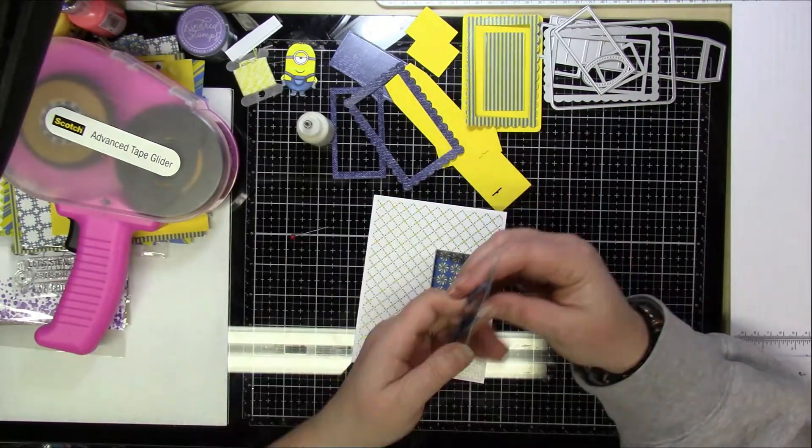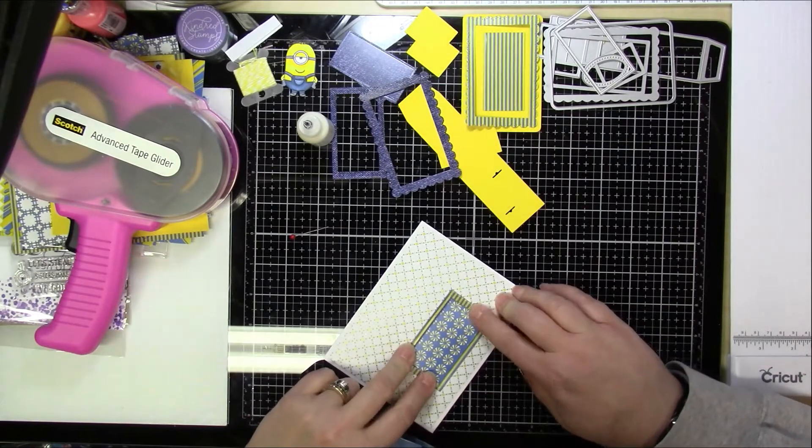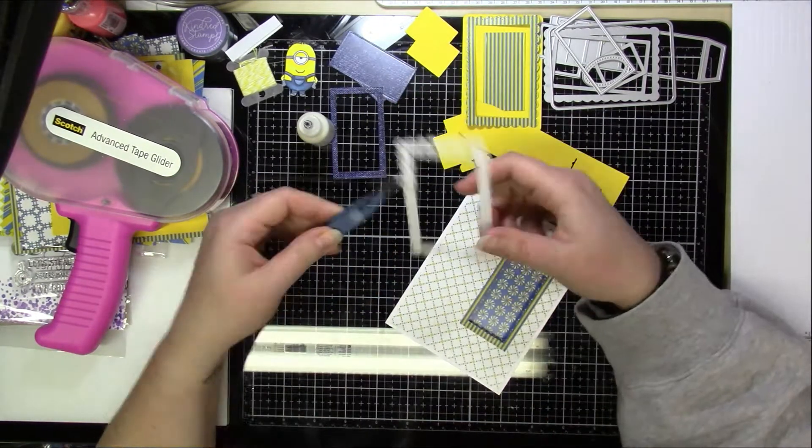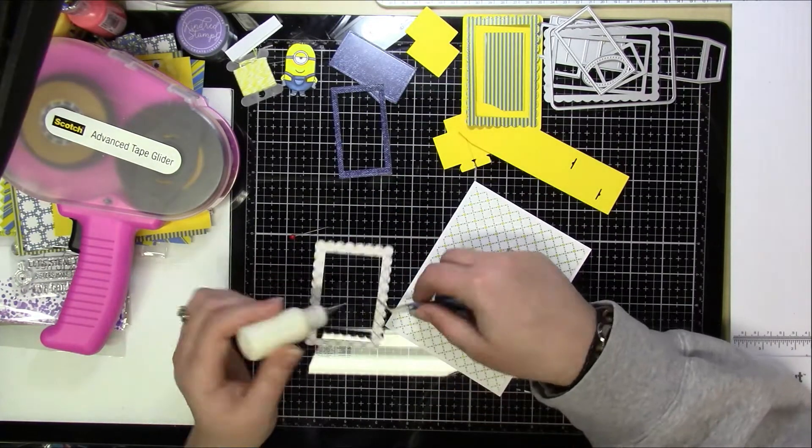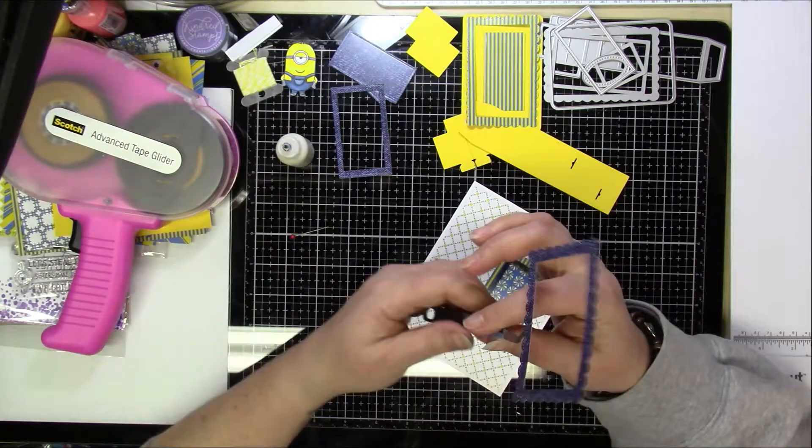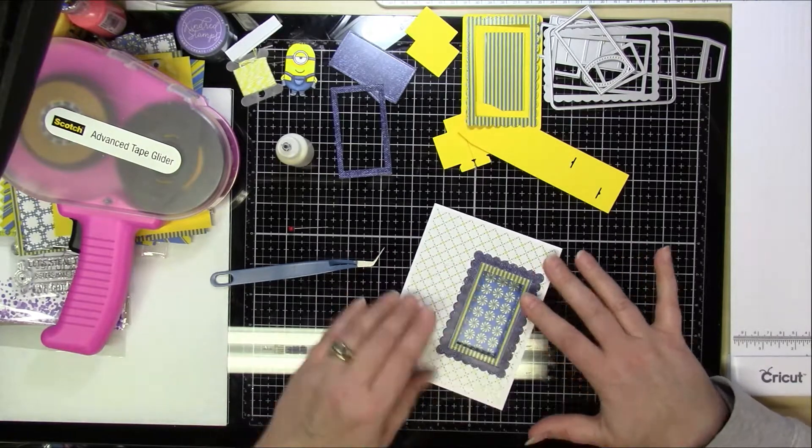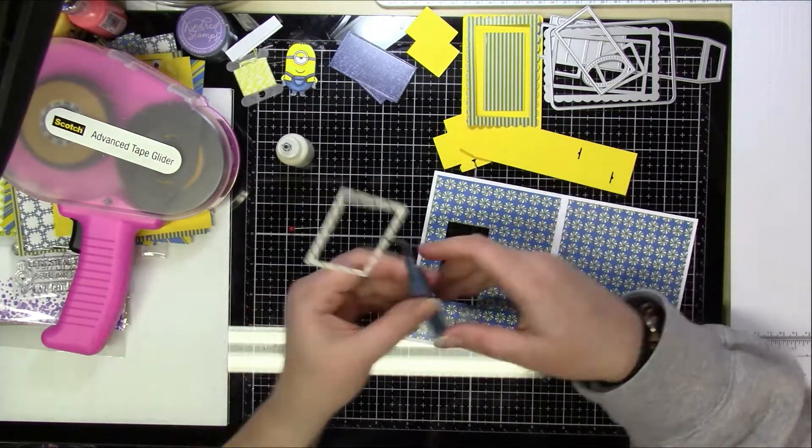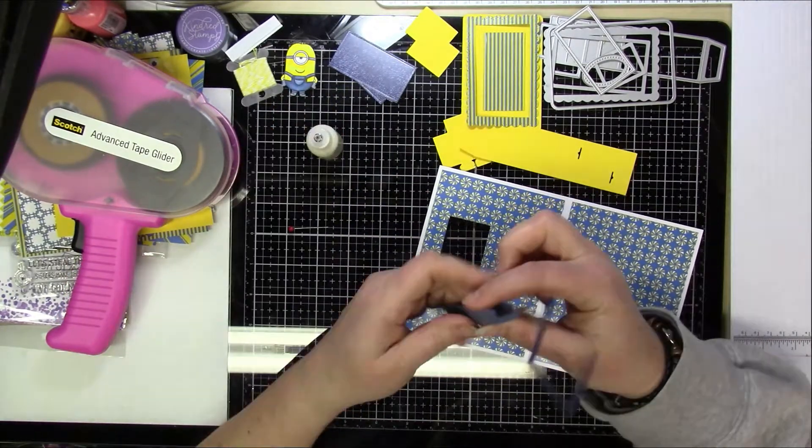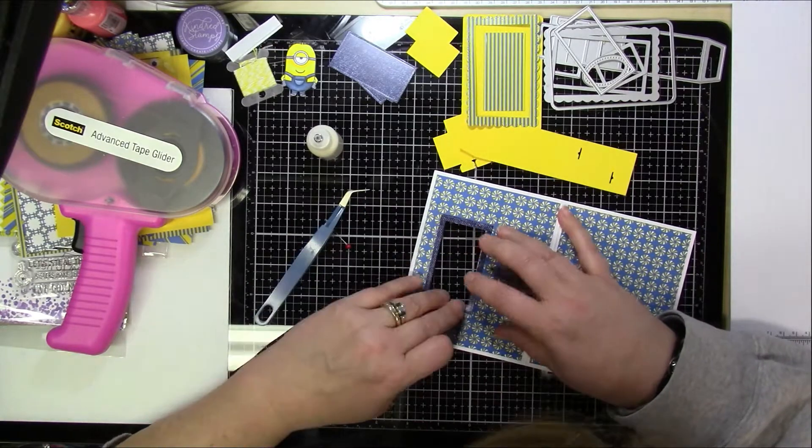So now here's one of the frames I created with the smaller and then the larger rectangle. And then here's the scalloped frame that I actually created with the larger rectangle and then the scalloped frame. And that's going to go on the front. On the inside I'm just going to put one of the frames that I made with the larger and smaller rectangles.